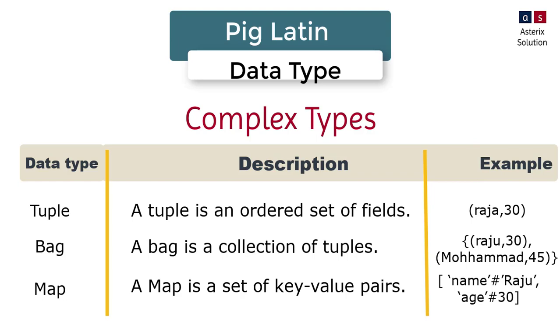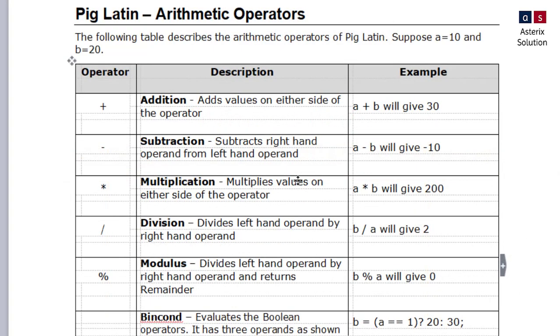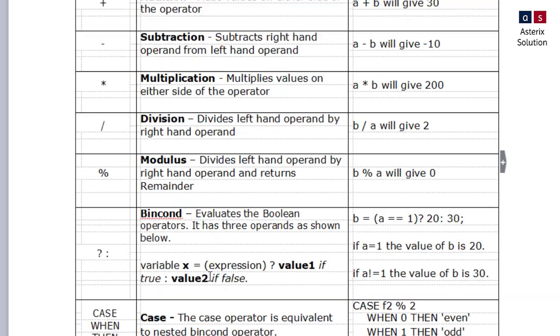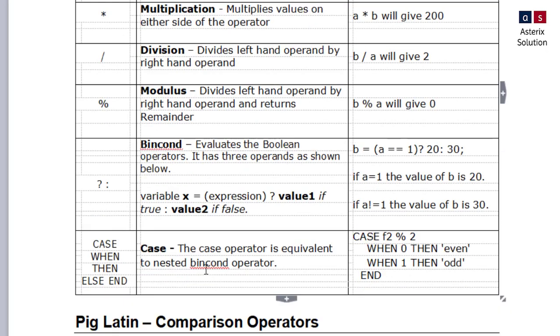Pig, like any other language, also supports arithmetic operators, which are addition, subtraction, multiplication, division, modulus. It also provides boolean operators, also called ternary operators. Before the question mark, you write the condition. After the question mark, you write two values separated by colon. If the condition before the question mark is true, the first value will be considered, or else the second value will be considered.